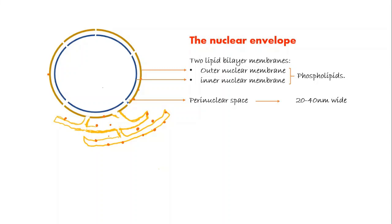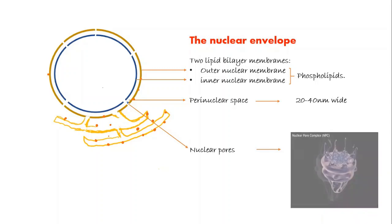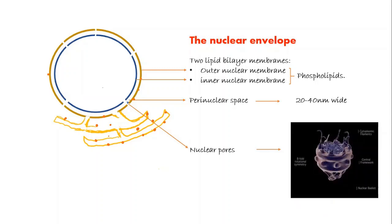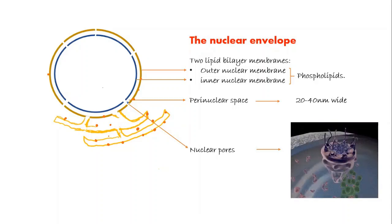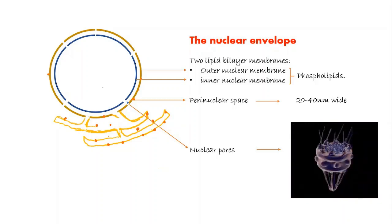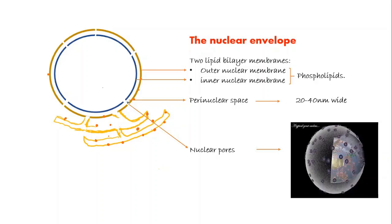On the nuclear envelope, nuclear pores are present, which are made up of proteins through which substances enter or leave the cell. For example, RNA proteins, etc. The nuclear membrane pores are occupied by dense granules or fibrillar material arranged in a cylindrical manner.